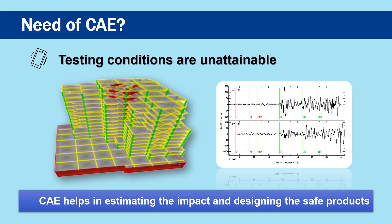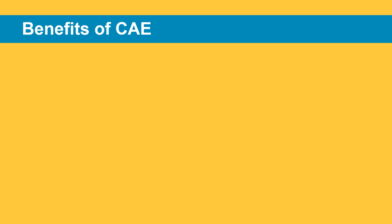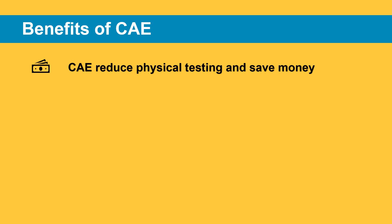Computer-aided engineering is a vital part of the product development process and is the most sought-after software tool by industries due to the numerous benefits it possesses. First and foremost, CAE reduces physical testing and saves money. Since the testing results are already predicted through CAE and necessary changes are incorporated in the design, physical tests are conducted just to validate the CAE result, which not only leads to a reduction in design iterations and testing costs but also saves a great amount of time.